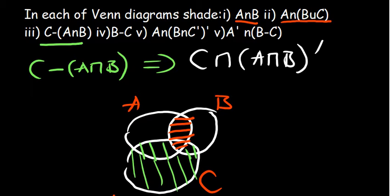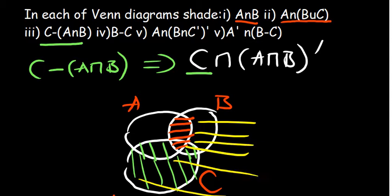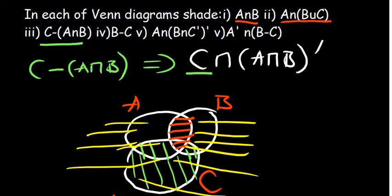If you want to present it in a different way, you can also say it is the region of C intersected with A intersection B complement. If you talk about A intersection B complement, it's the region outside the red part. So now we want to find the intersection with C, which will still come out to be this region that we've shaded in green. That is why we're saying this expression is equivalent to that part.